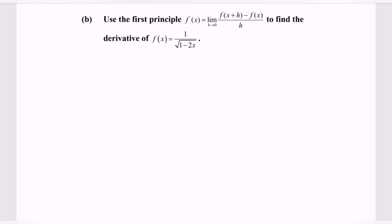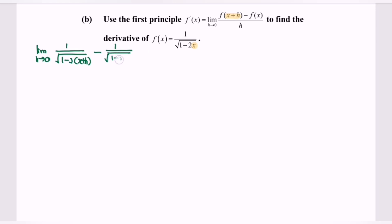So kindly substitute the function into the first principle formula. We have the limit as h approaching 0, and we substitute x plus h into the function. So we will have 1 over square root of 1 minus 2 times (x plus h), minus f(x), which is 1 over square root of 1 minus 2x, all over h.